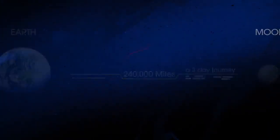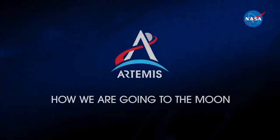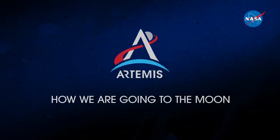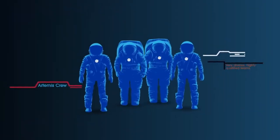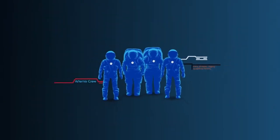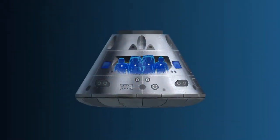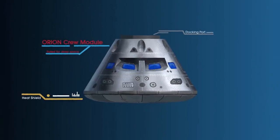So, what will an Artemis mission look like? Everything is designed and tested with our most important element in mind: the astronauts. This is their deep-space, human-rated spacecraft called Orion, built in three parts.